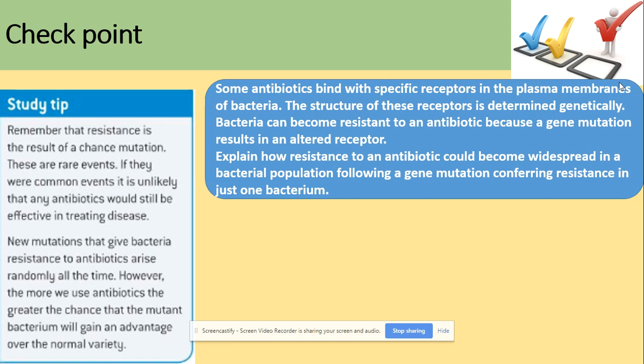A really important fact here concerns antibiotics. Some antibiotics bind with specific receptors in the plasma membrane of bacteria, and the structure of those receptors is determined genetically. Bacteria can become resistant to an antibiotic because a gene mutation results in an altered receptor. The question is: explain how resistance to an antibiotic could become widespread in a bacterial population following a mutation.